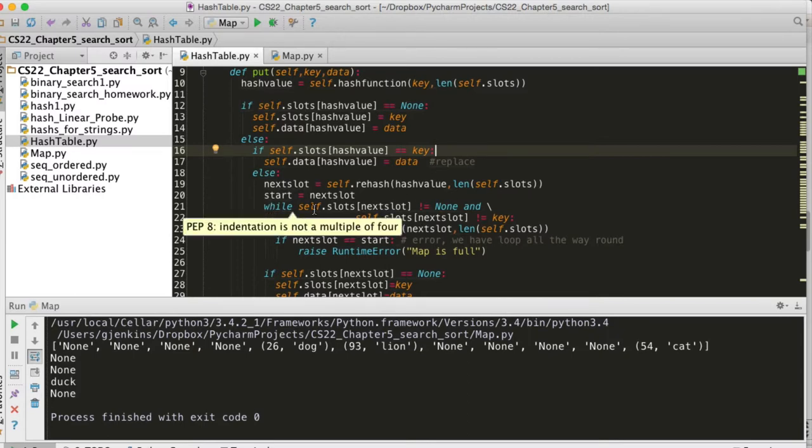So it checks while the next slot is not none and the next slot is not equal to the key, then it's going to rehash. And if next slot is equal to start, it's looped all the way around. So the map is full and it raises an error.